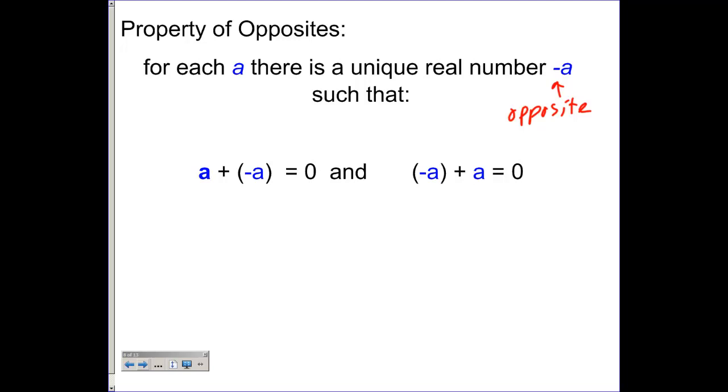So it just really means opposite, such that a plus negative a is equal to 0 or negative a plus a is equal to 0. So if I take a is equal to, let's say, 5,